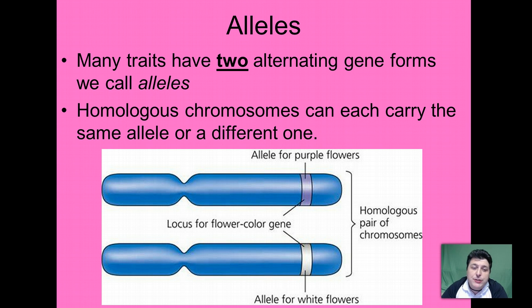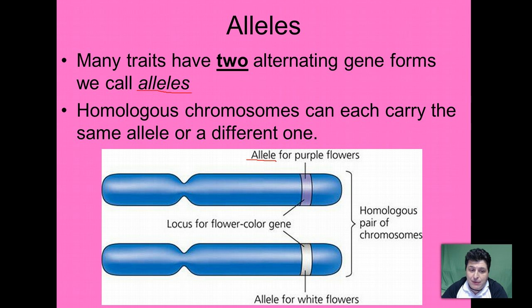Many traits have alternate forms of a gene, and we call these alleles. Homologous chromosomes can carry the same allele or they could carry a different one. In this picture, we've got a pair of homologous chromosomes that came from a flower. One chromosome contains the allele for purple flowers, and the other contains the allele for white flowers. This flower could have inherited two purple alleles or two white alleles, but in this case it got one purple and one white.